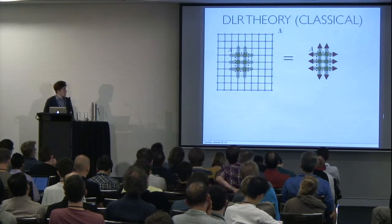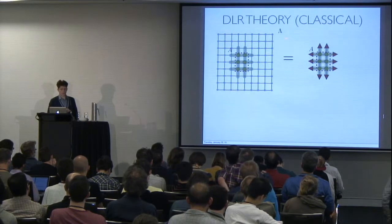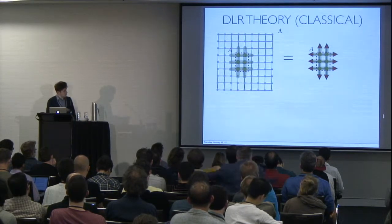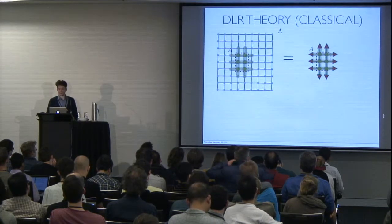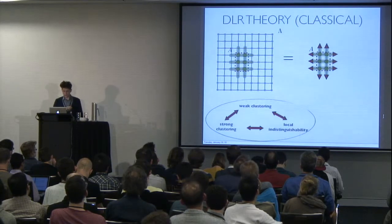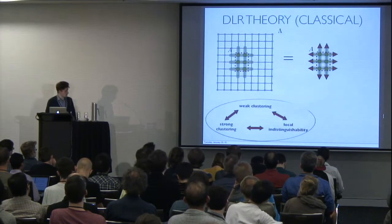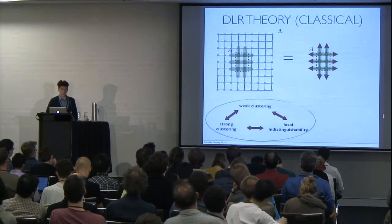And there's a magnificent theory called DLR theory, which states that you can represent a restriction of a Gibbs state on a lattice system to a certain subset A by simply fixing the boundary conditions around A. And this allows you to show extremely strong equivalences.